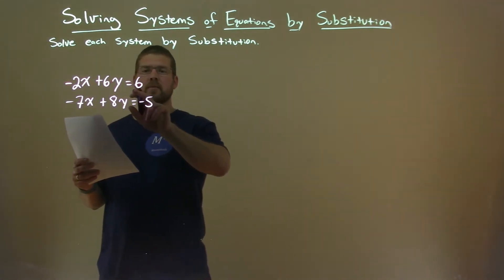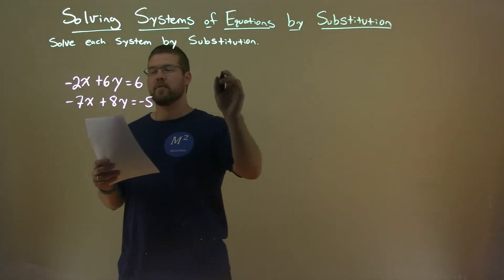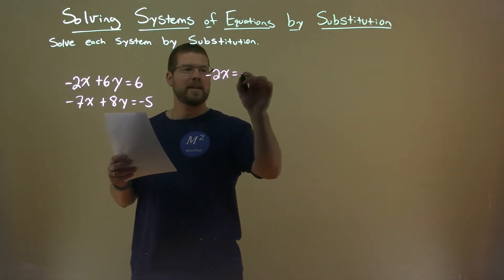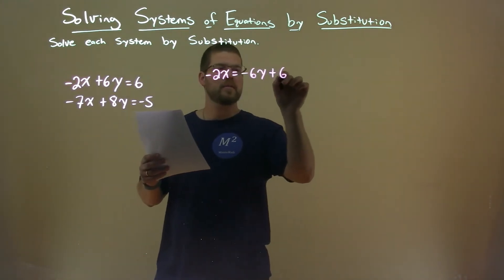So that first equation, I have negative 2x plus 6y equals 6. Subtract the 6y to both sides, and I have negative 2x equals negative 6y plus 6.